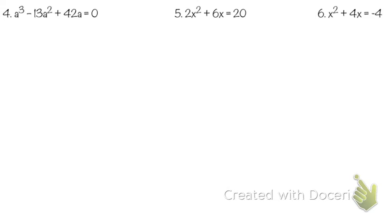We don't have multiplication, so we need to factor to get multiplication. Is there a GCF? Yes — they all have an A. So we're going to be left with A times (a squared minus 13a plus 42) after taking out 1A.